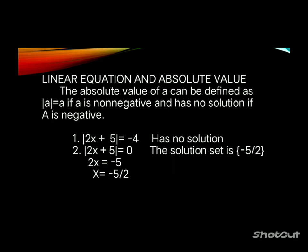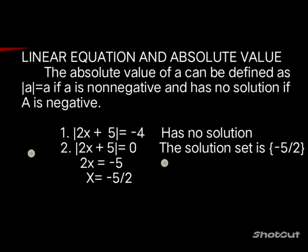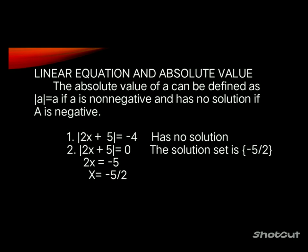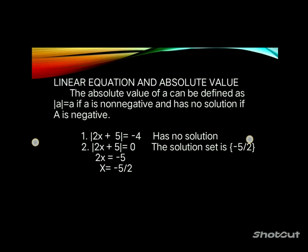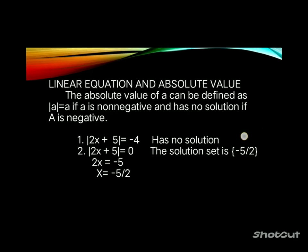Applying additive inverse: 2x equals negative 5, then applying multiplicative inverse gives x equals negative 5 over 2. The solution set is {negative 5 over 2}.